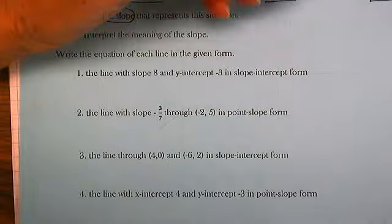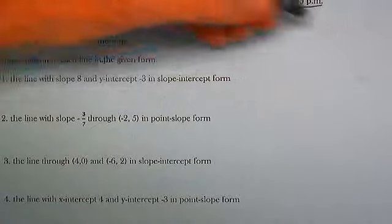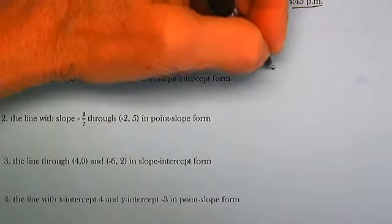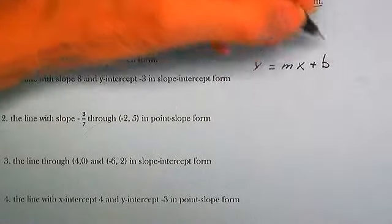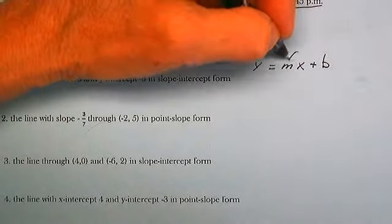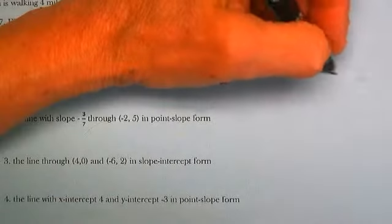We can do this in one step. Slope-intercept form is y equals mx plus b, where m is the slope and b is the y-intercept.